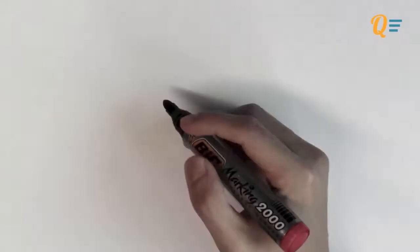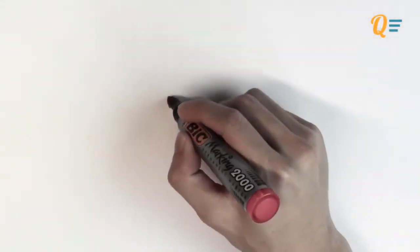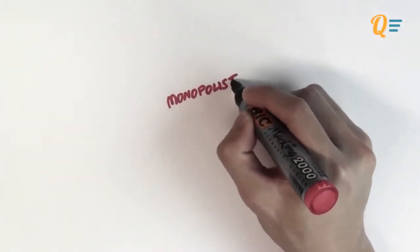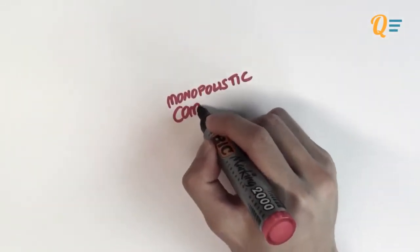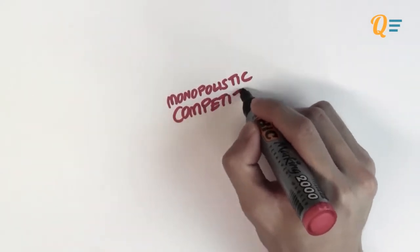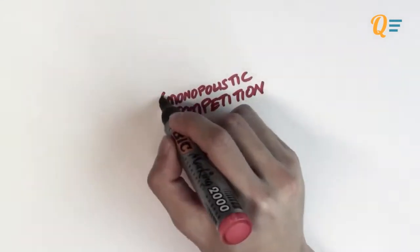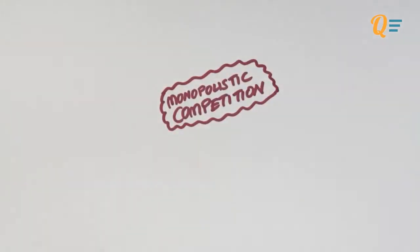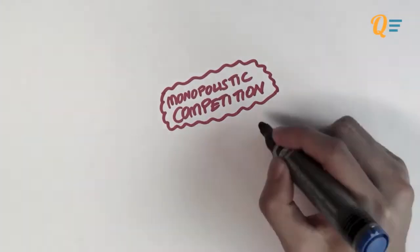If you've been watching the videos in order, this is the last market structure that we'll be going through for the entire Chapter 4. And today we'll be talking about monopolistic competition.